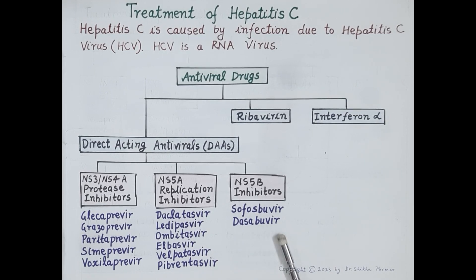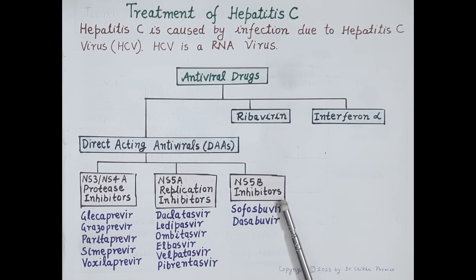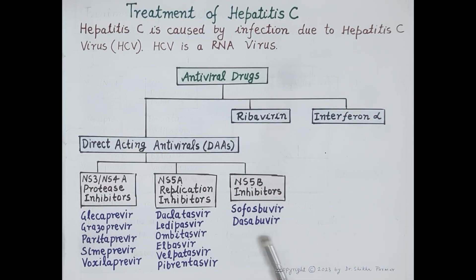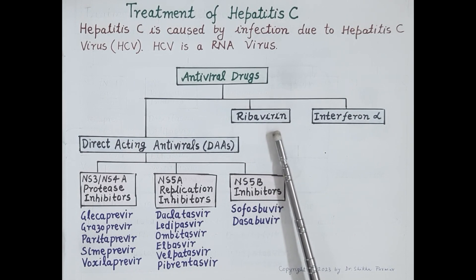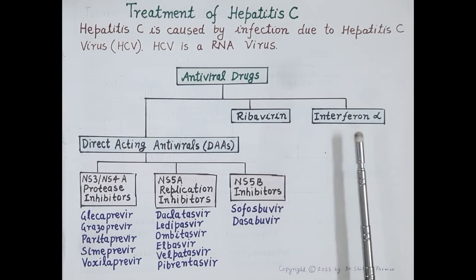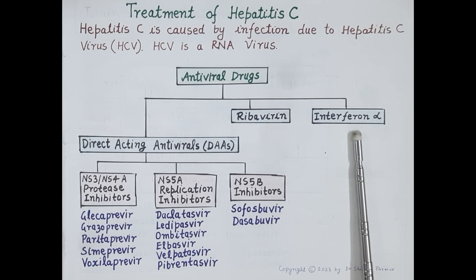The third type of direct-acting antivirals are NS5B inhibitors, which include drugs like Sofosbuvir and Dasabuvir, ending with '-buvir'. Ribavirin and interferon alpha are also used for the treatment of hepatitis C.